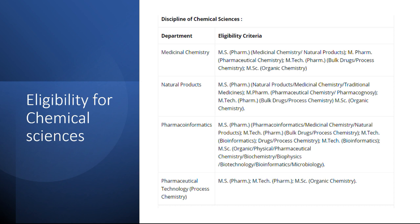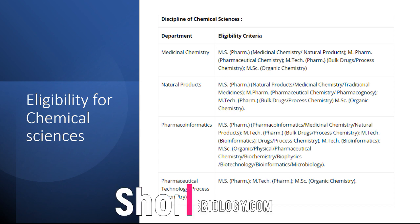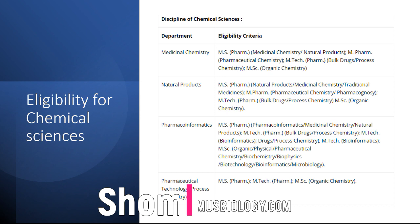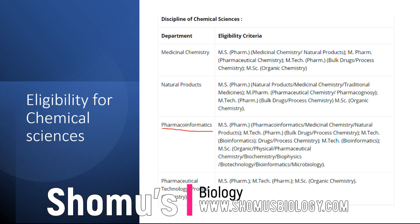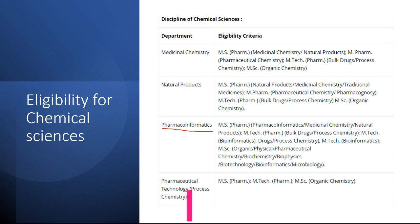For pharmacoinformatics, you can be an MS in Pharmacy or M.Tech in Pharma, or hold an MSc in biochemistry, biophysics, biotechnology, bioinformatics, or microbiology. If you belong to the hardcore life science field — not from a proper chemistry background — you should apply for the pharmacoinformatics course, not natural products or medicinal chemistry, as you won't get admission there. Similarly, pharmaceutical technology requires MSc Pharma, M.Tech Pharma, or MSc in organic chemistry, so biotech, microbiology, biophysics, and biochemistry students should apply for pharmacoinformatics only.